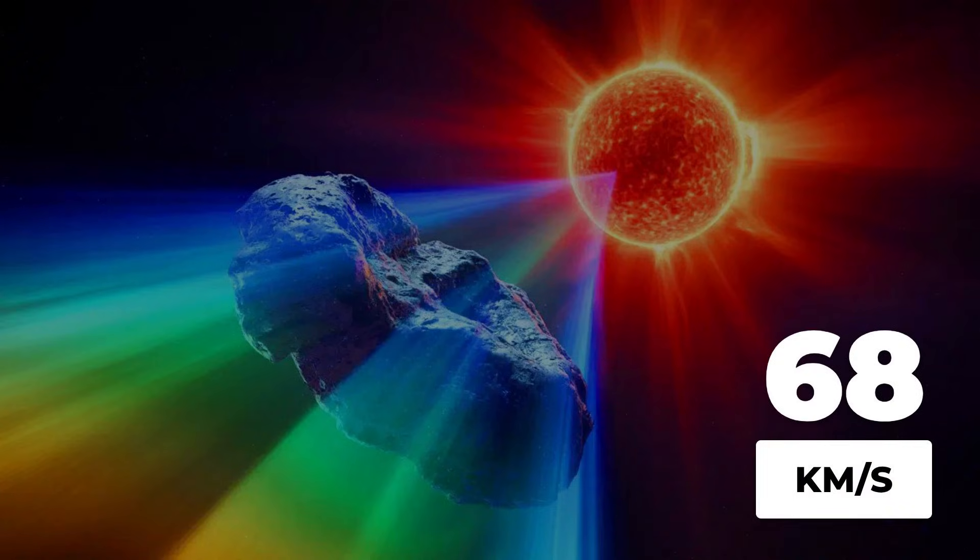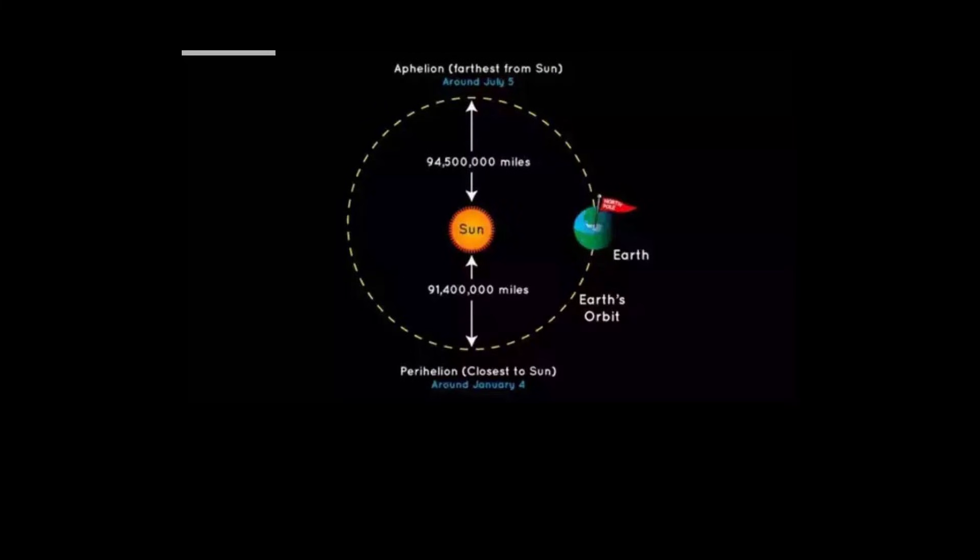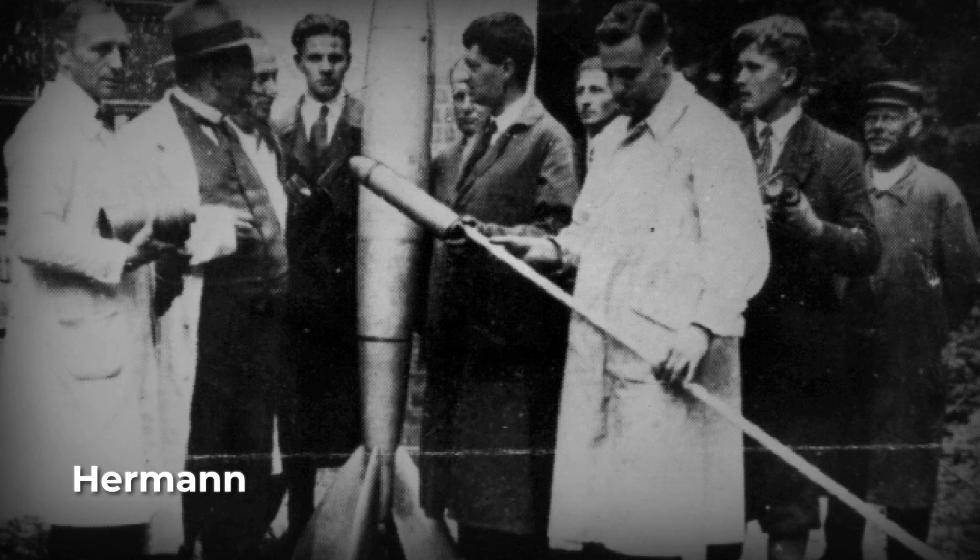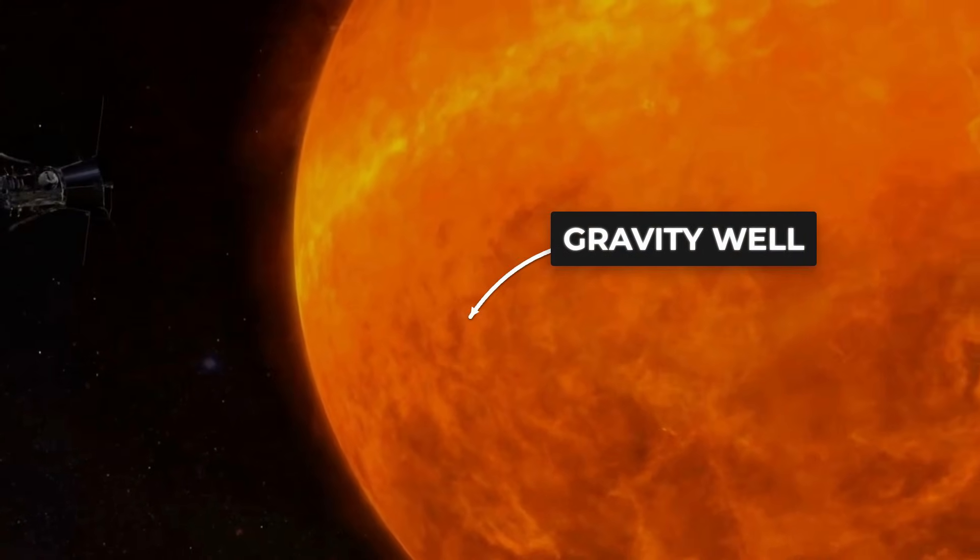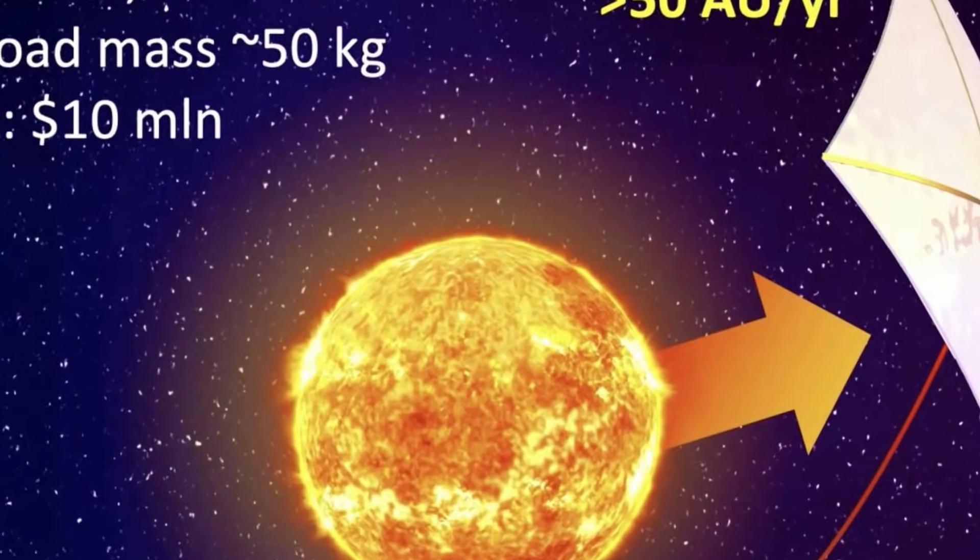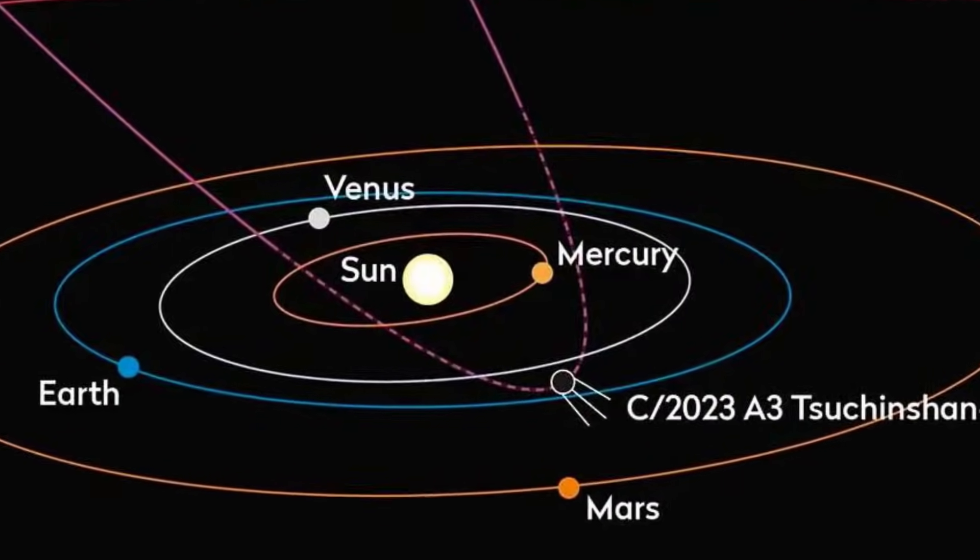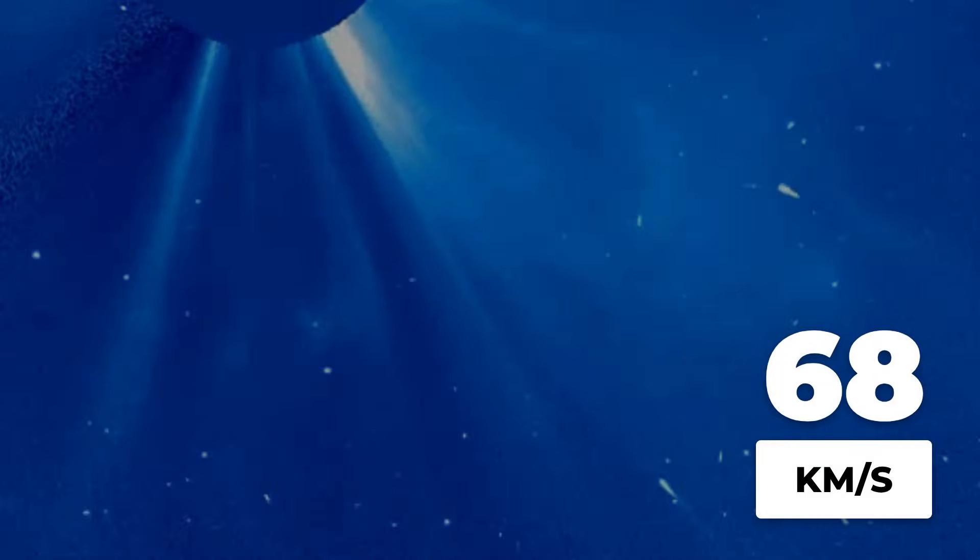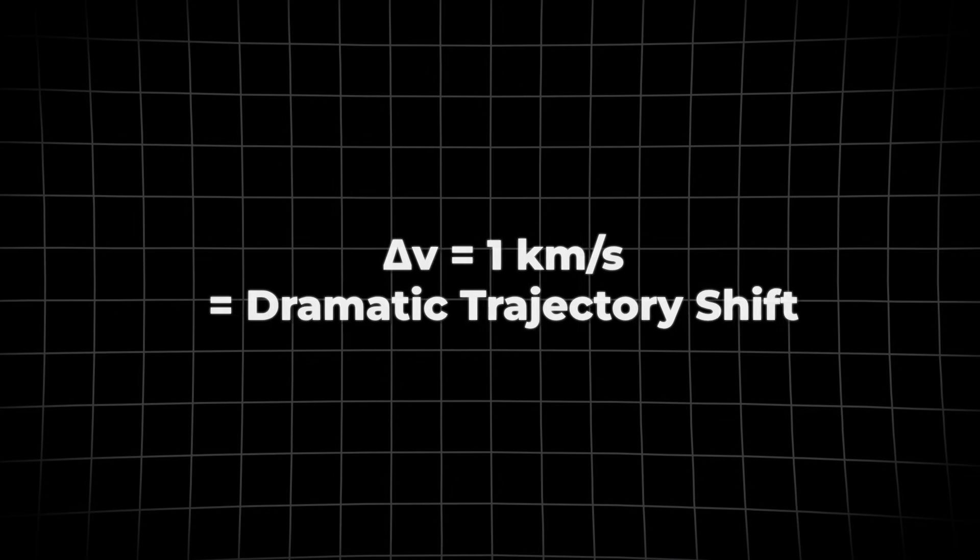At perihelion, 3i-Atlas will be moving at nearly 68 km per second, more than twice the speed of the fastest spacecraft ever launched from Earth. This is the moment when the laws of orbital mechanics offer a unique loophole. The Oberth effect, first described by Hermann Oberth in 1929, states that a rocket burn is far more effective when performed at high speed, deep inside a gravity well. In plain terms, the same push from a rocket engine does much more when the object is moving fastest, especially near a massive body like the sun. The principle can be summed up in a simple rule: the change in orbital energy from a burn is proportional to the object's speed at the time of the burn.